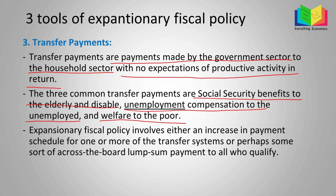Expansionary fiscal policy involves either an increase in the payment schedule for one or more of these transfer payments, or an across-the-board lump sum payment to all who qualify. The government either increases transfer payments on a schedule — monthly or every six months — or provides a lump sum to those who meet the requirements. That is the third tool of expansionary fiscal policy.